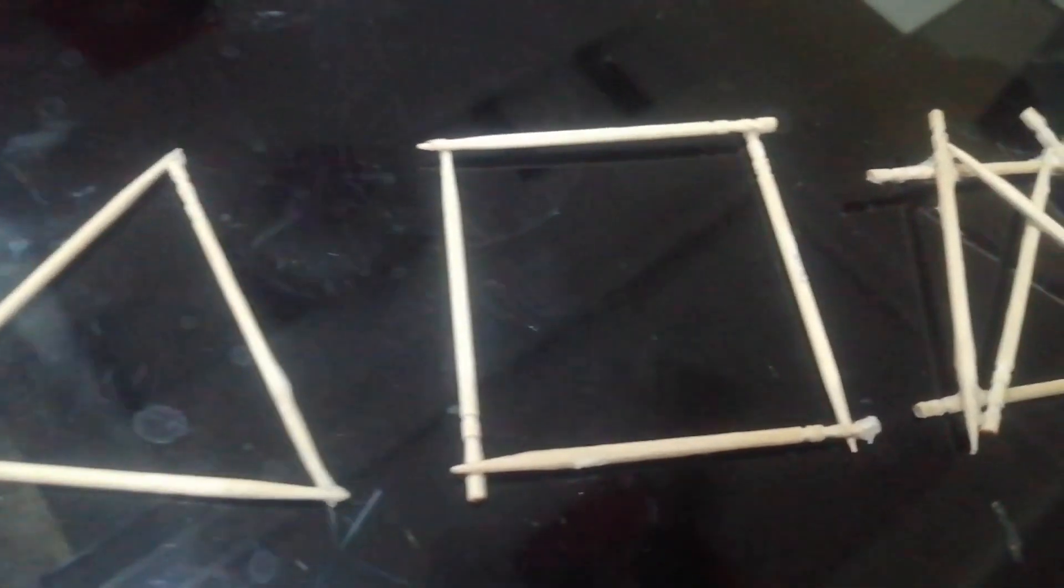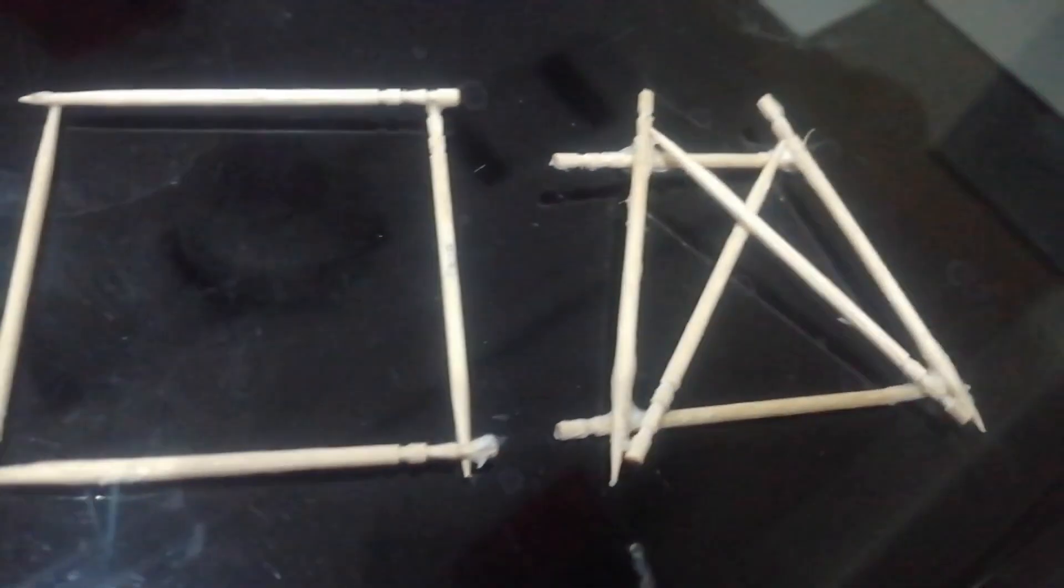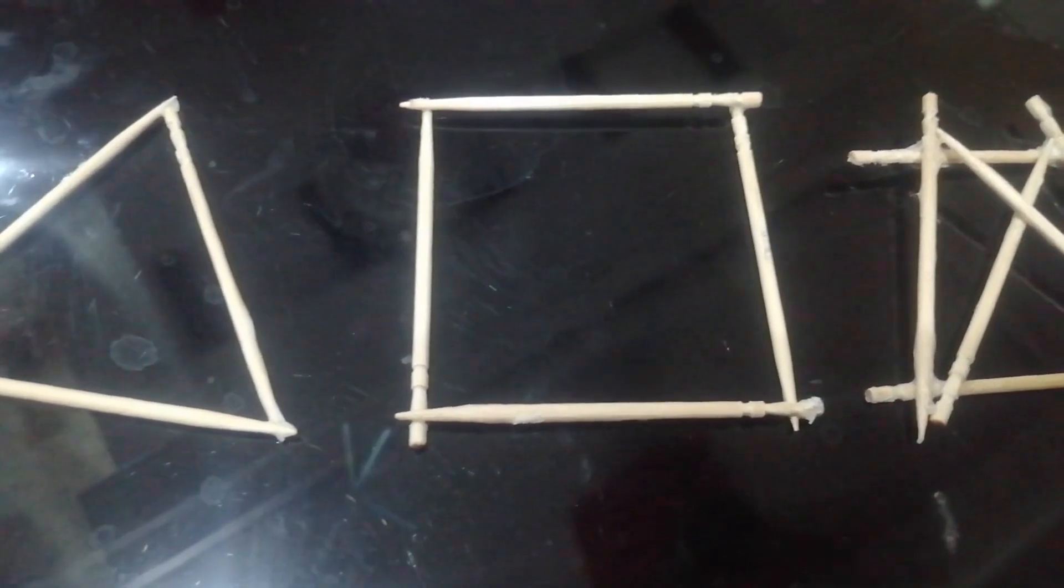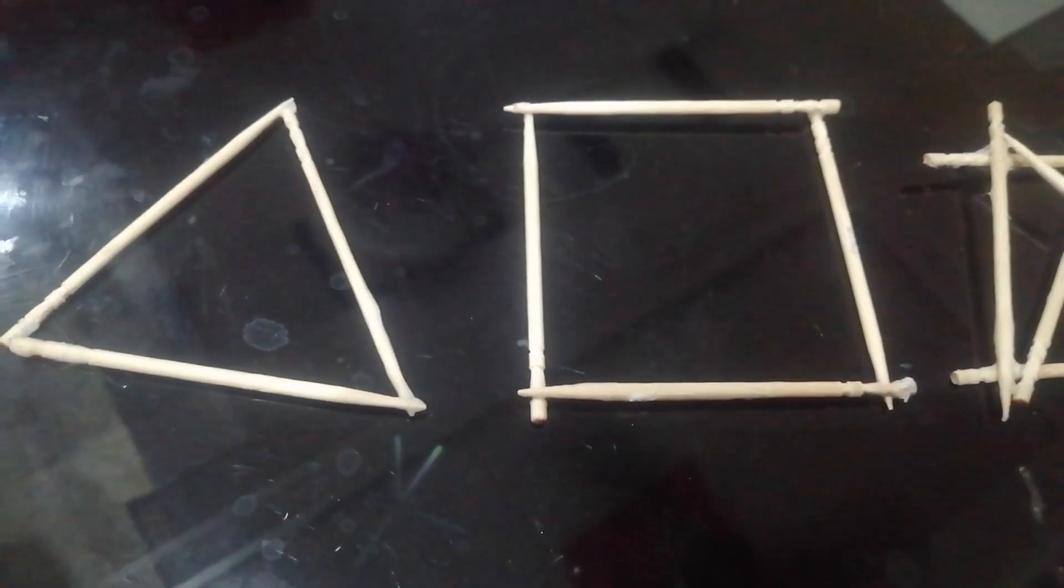So, finally, a frame can be perfect based on the condition M equals 2J minus 3 and but remember that the members of the frame must have enough cross section to resist the loads.